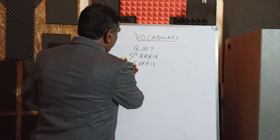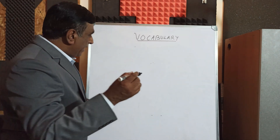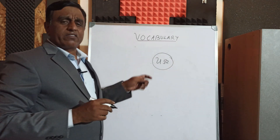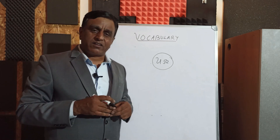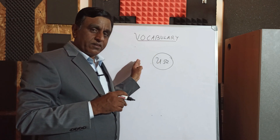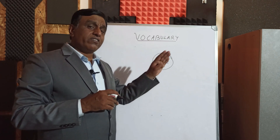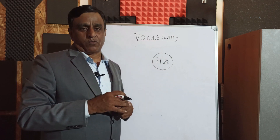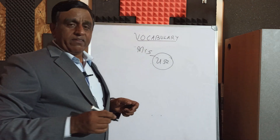Let us understand what is the prefix and suffix method — Hindi mein ise upsarg aur pratyay kahte hain. Take a small word like 'use' — iska istamal hum roz karte hain. I can add a few letters to the left, which is a prefix, and I can add a few letters to the right, which is a suffix. In this way, from this one base word, I can make a very large number of words. For example, as a human being my tendency is to misuse.